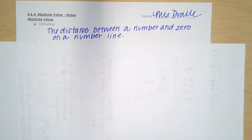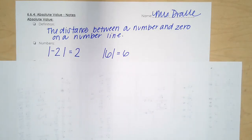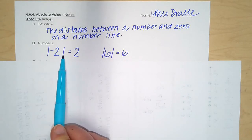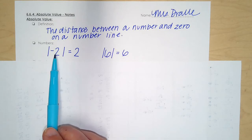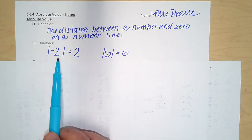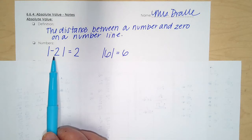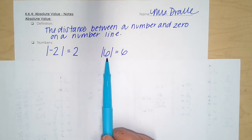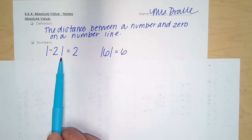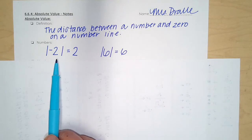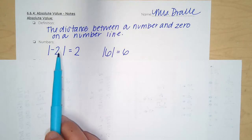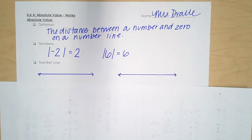Let's first look at what the symbol for absolute value is. When we have these two straight lines surrounding an integer, a decimal, or a fraction, this reads as the absolute value of negative two. This reads the absolute value of six. So when we see those two straight vertical lines surrounding an integer, a fraction, or a decimal, it means the absolute value of whatever is directly inside.